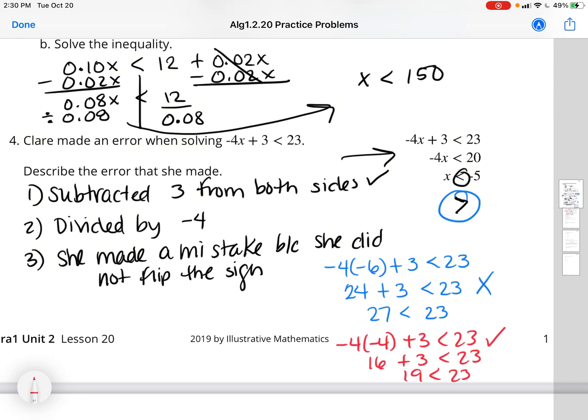If I flip the sign, that means x is greater than negative 5. Well, a number that's greater than negative 5 is negative 4. So I plugged in negative 4 here in the red. Negative 4 times negative 4. A negative times a negative is a positive. If you hate to hate, you love. So 4 times 4 is 16. 16 plus 3 is 19. 19 is less than 23. So now I know when I flip that equation around that my answer is now correct. So that is where Claire made her mistake.